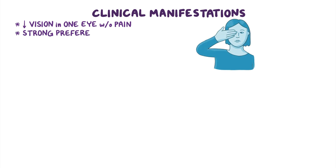The typical clinical manifestation of amblyopia includes diminished vision in one eye without pain. Clients often have a strong preference for the healthy eye, which is particularly evident when covering their healthy eye.